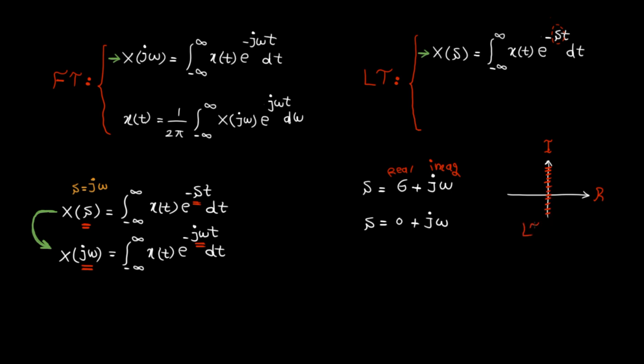S becomes jω when the real part of s is zero, which simply means all the points on the imaginary axis. This implies that Laplace transform becomes Fourier transform on the imaginary axis — or in other words, if you can replace s by jω. Please note that I'm saying if. Sometimes when you replace s by jω, the integral goes to infinity, which means the Fourier transform is not even available. I will talk about this in the upcoming lecture.